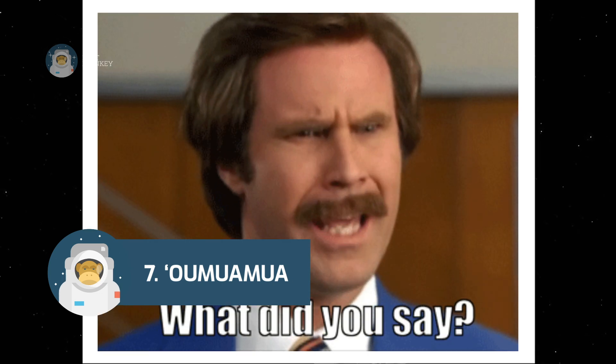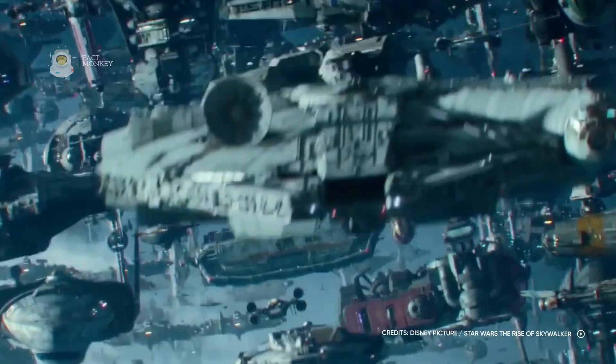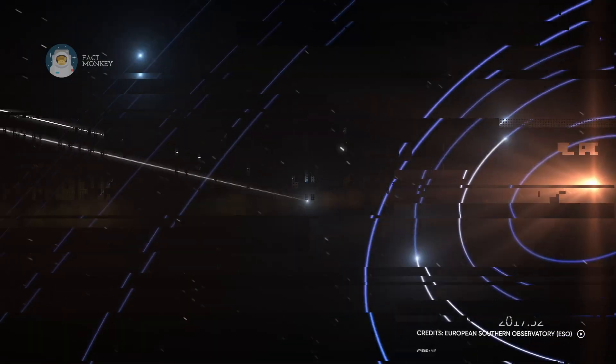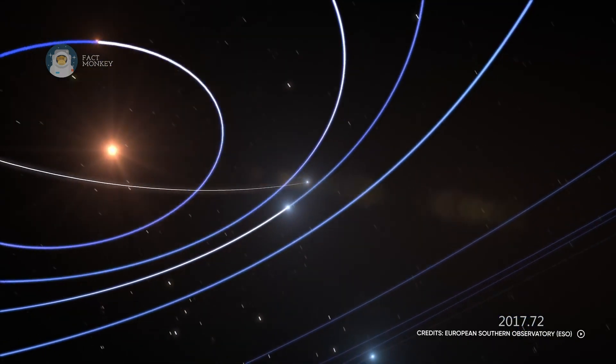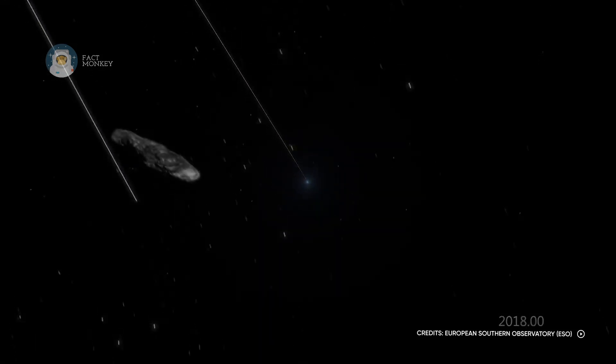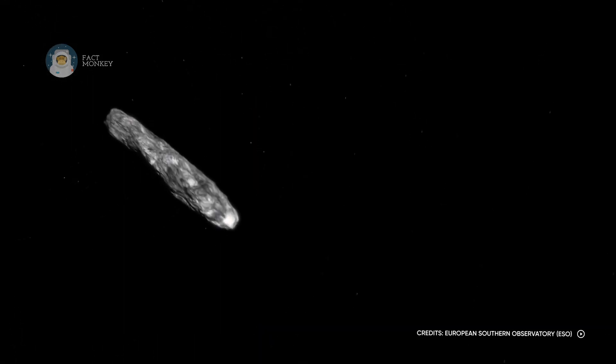Oumuamua. The name and the shape of the Oumuamua will make you think that it's something that's featured in the latest Star Wars movie. However, this object that's considered the first ever interstellar visitor of our solar system is real, and it has baffled millions of people around the world.